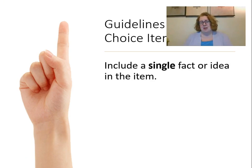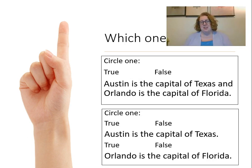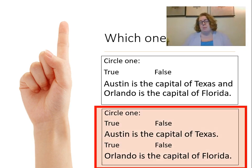There should be only one fact or idea per item — if there's more than one fact it becomes ambiguous. For example, if I said 'Austin is the capital of Texas and Orlando is the capital of Florida,' and the answer is false, I don't know if the student answered false because they know Orlando isn't the capital of Florida or because they think Austin isn't the capital of Texas. Splitting them into separate items is better because it removes that confusion.